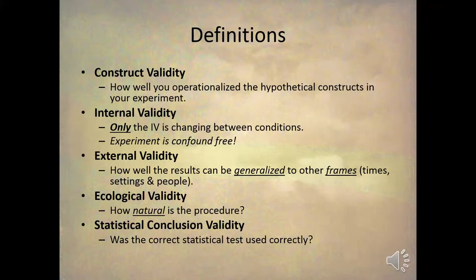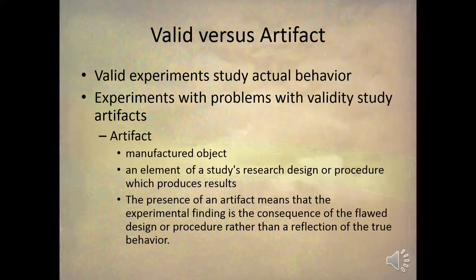Finally, we have statistical conclusion validity — whether the correct statistics were used correctly in the experiment and whether they were presented correctly. These are the major types of validity that we'll be looking at this semester.